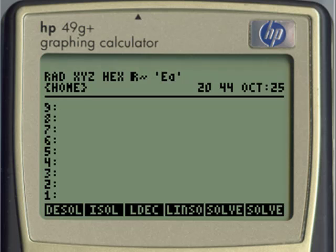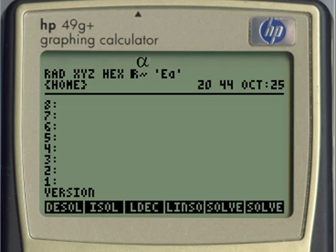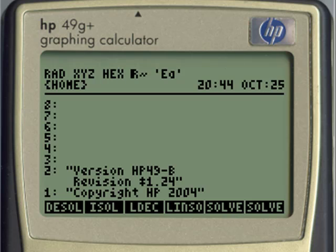To find the version of the ROM, we type no apostrophes, alpha, alpha, version, kill alpha with the third alpha stroke, type enter, and there we have it. The version of the ROM in this calculator is revision 1.24.